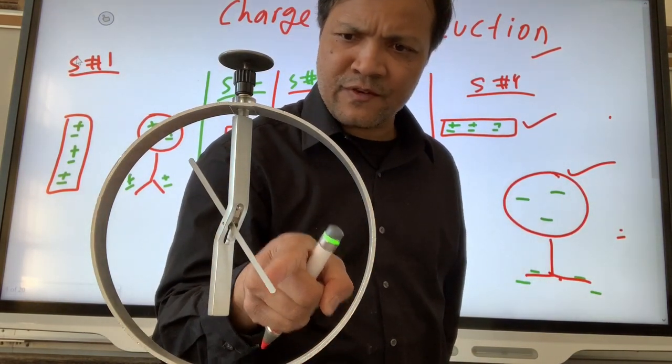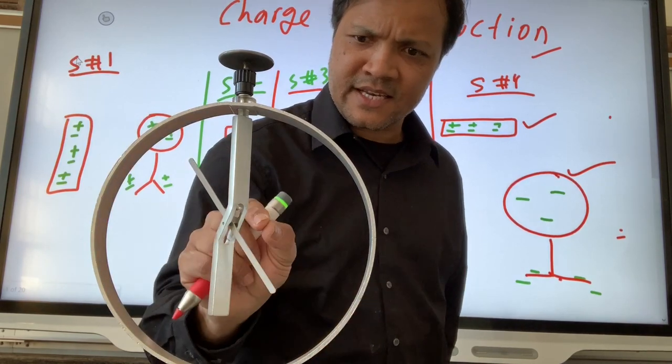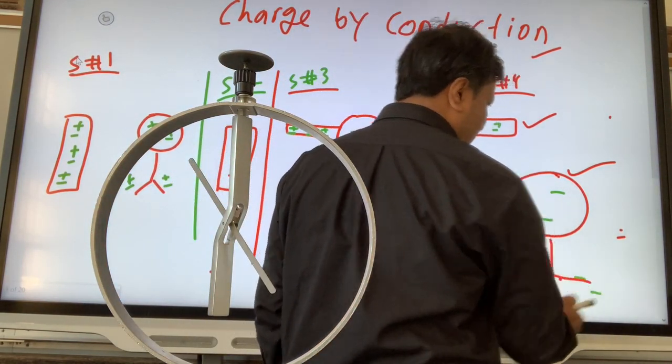Since there are a lot of electrons over here, they repel each other. So they are repelling each other.